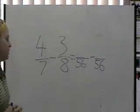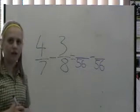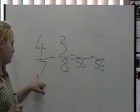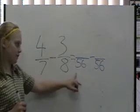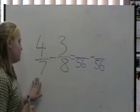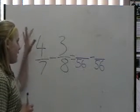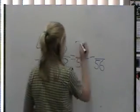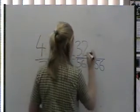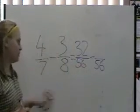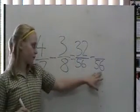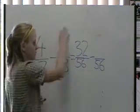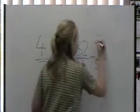So now we need to change both fractions to something on 56. So what did we do to the 7 to make it 56? We times it by 8. So 8 times 4 is 32. And what did we do to the 8 to make it 56? We times it by 7. So 7 times 3 is 21.